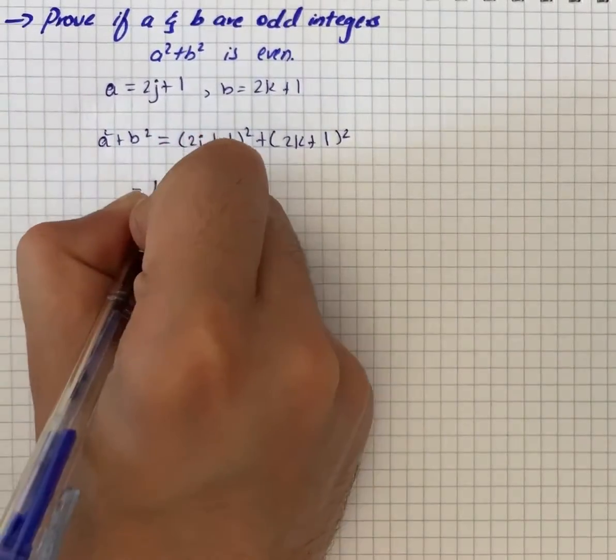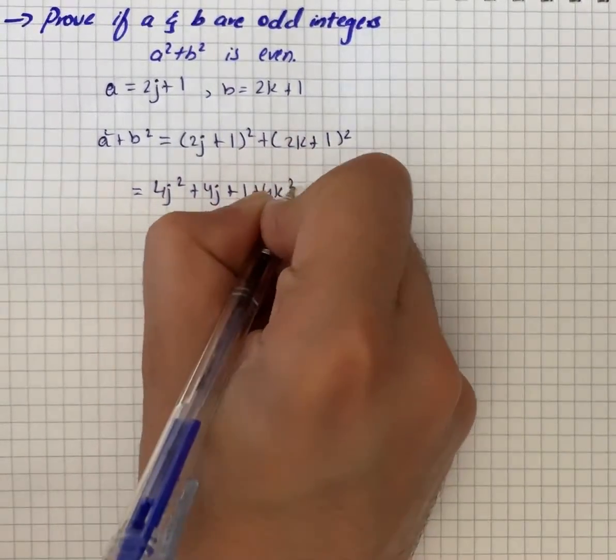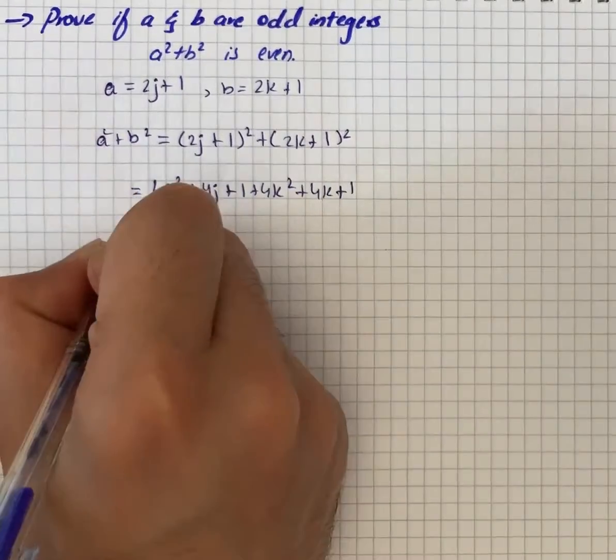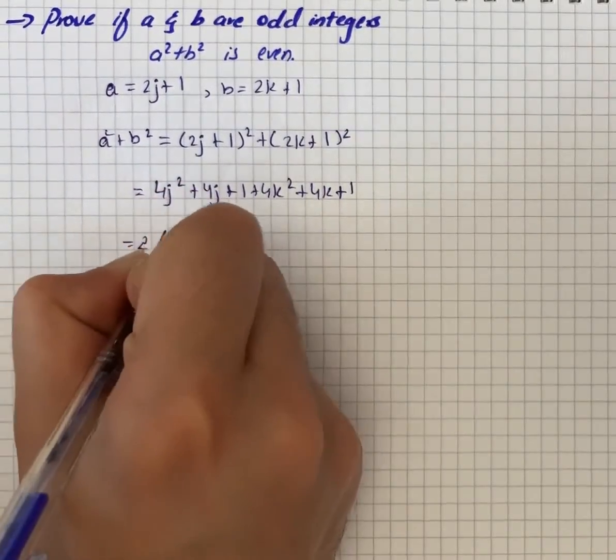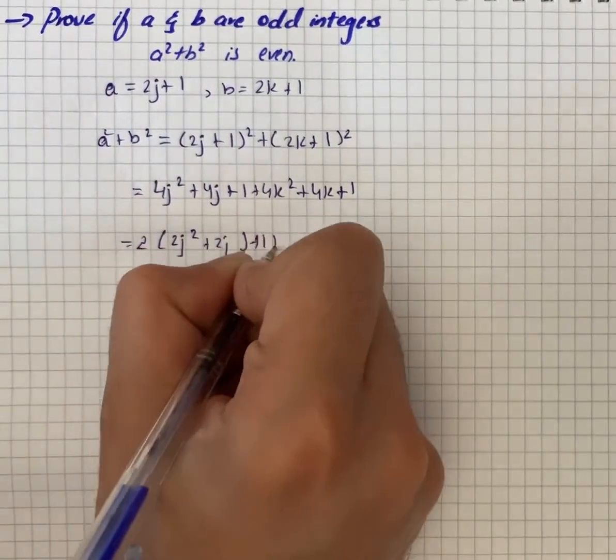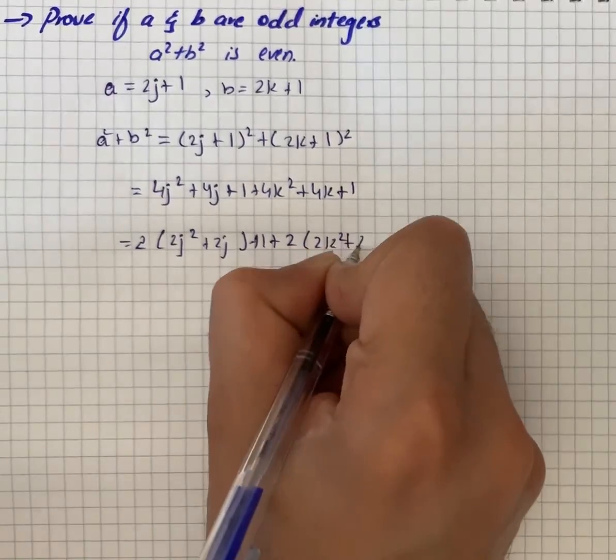So we have 4j² + 4j + 1 + 4k² + 4k + 1. On factorization we have 2(2j² + 2j + 1) + 2(2k² + 2k + 1).